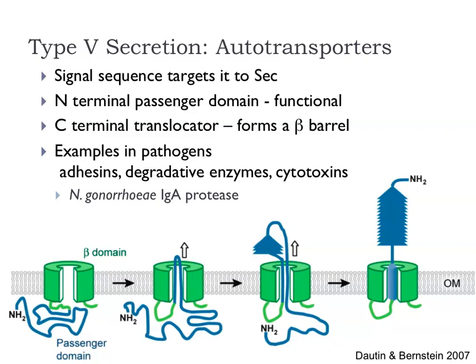Autotransporters encode things like adhesins, various enzymes, and cytotoxins. One example: Neisseria gonorrhoeae has an IgA protease secreted through an autotransporter route. This protein specifically targets IgA immunoglobulins in body fluids, destroying them and thereby removing a barrier to bacterial growth and colonisation of those surfaces.